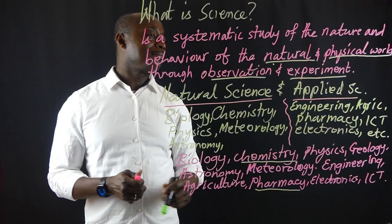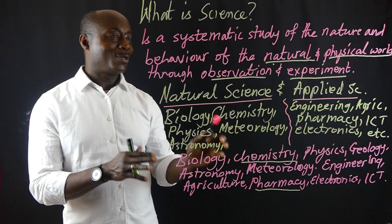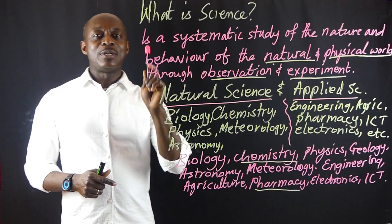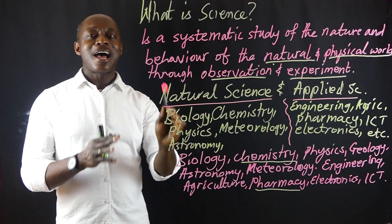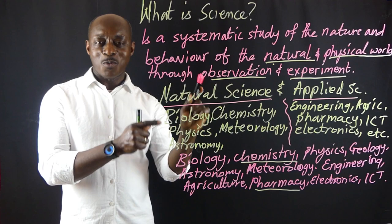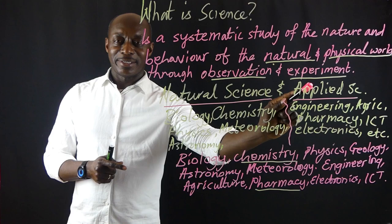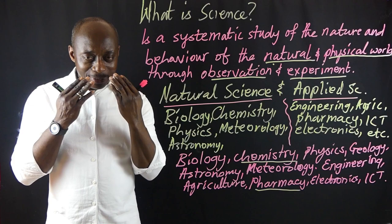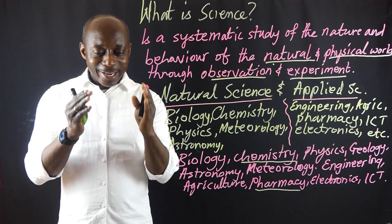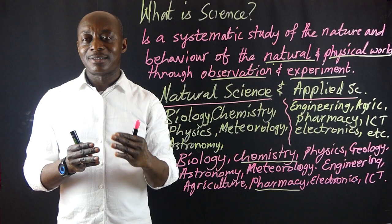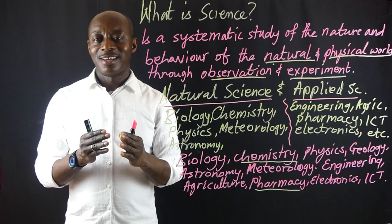To summarize — when we say science, it is a systematic study of the nature and behavior of the natural and physical world through observation and experiment. Observation means you will have to observe, take a critical look at things, and then carry out some experiments — do some practical things to come out with concrete facts and figures, and then take a decision. That is what we call observation and experiment.